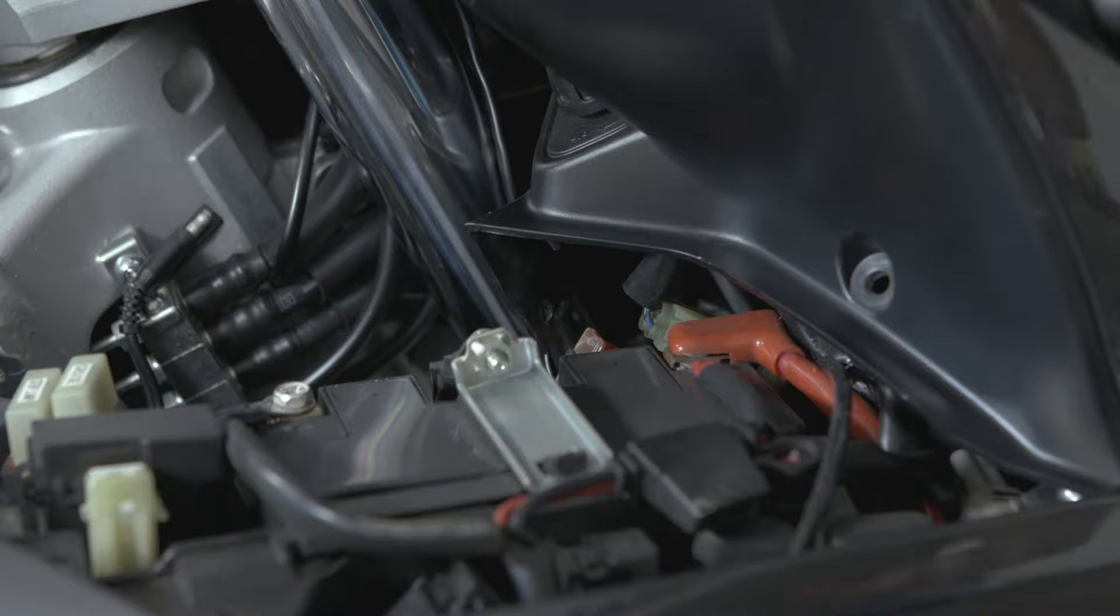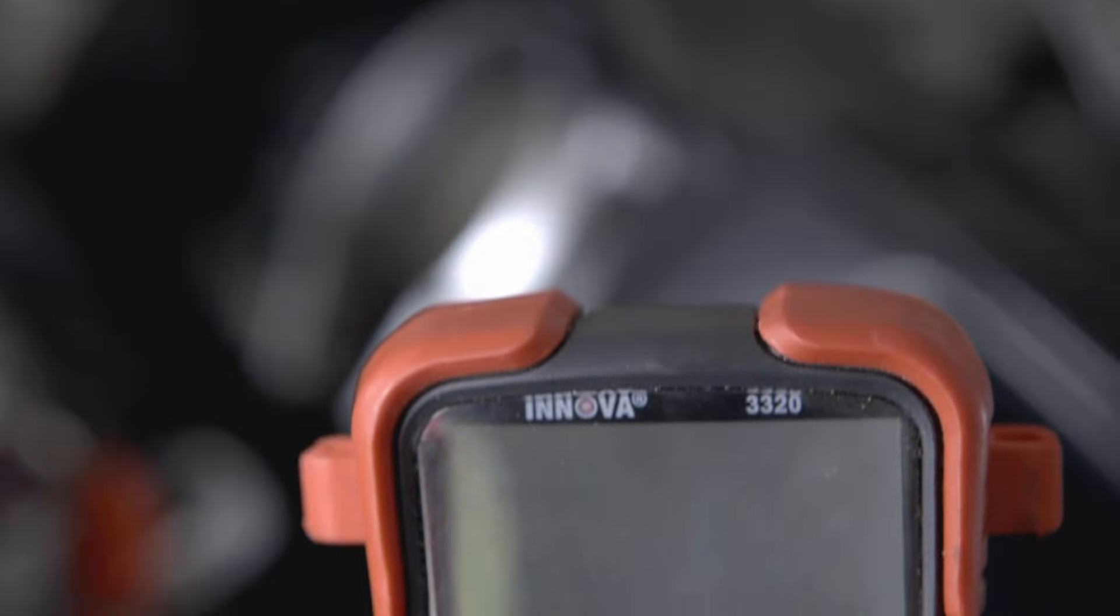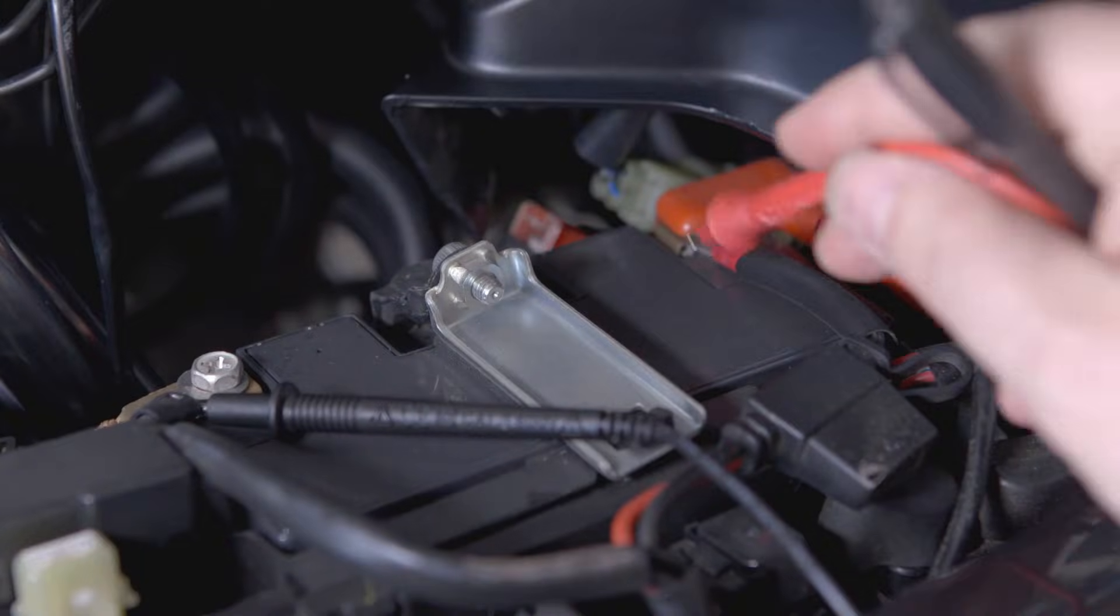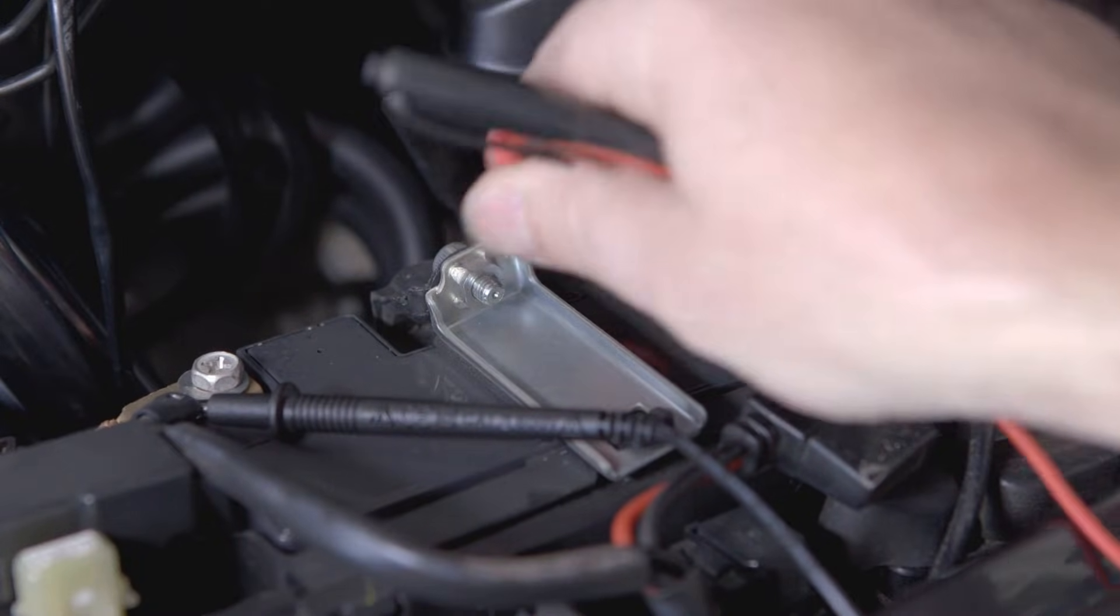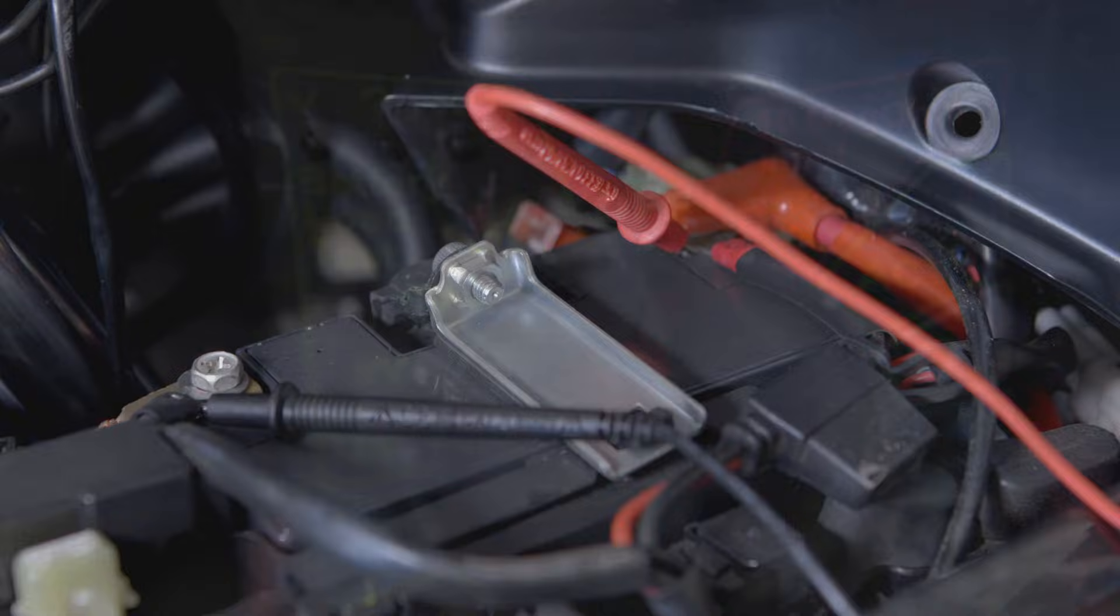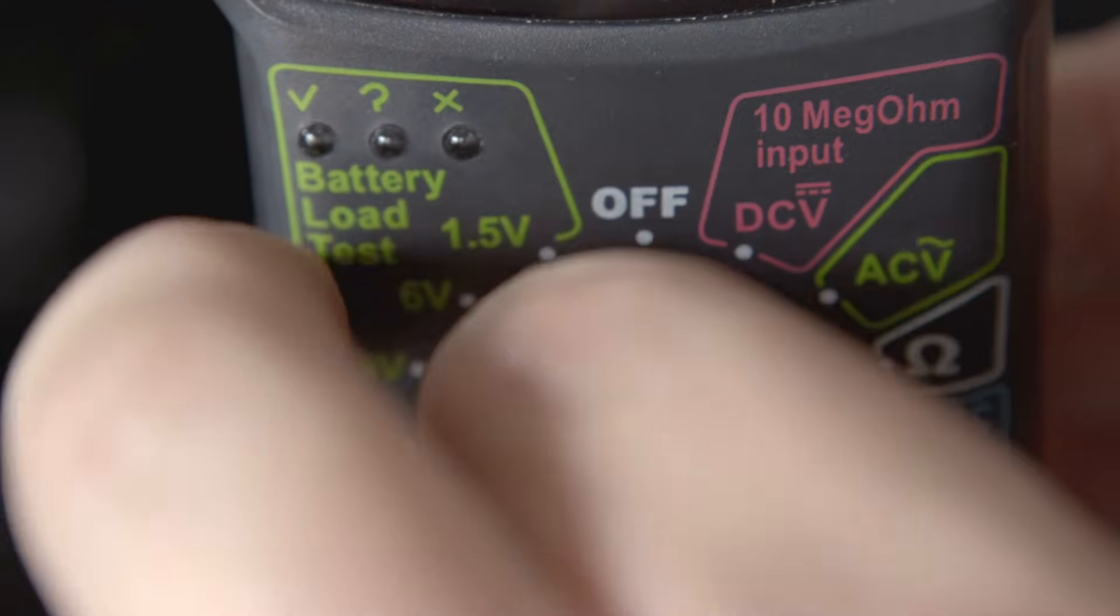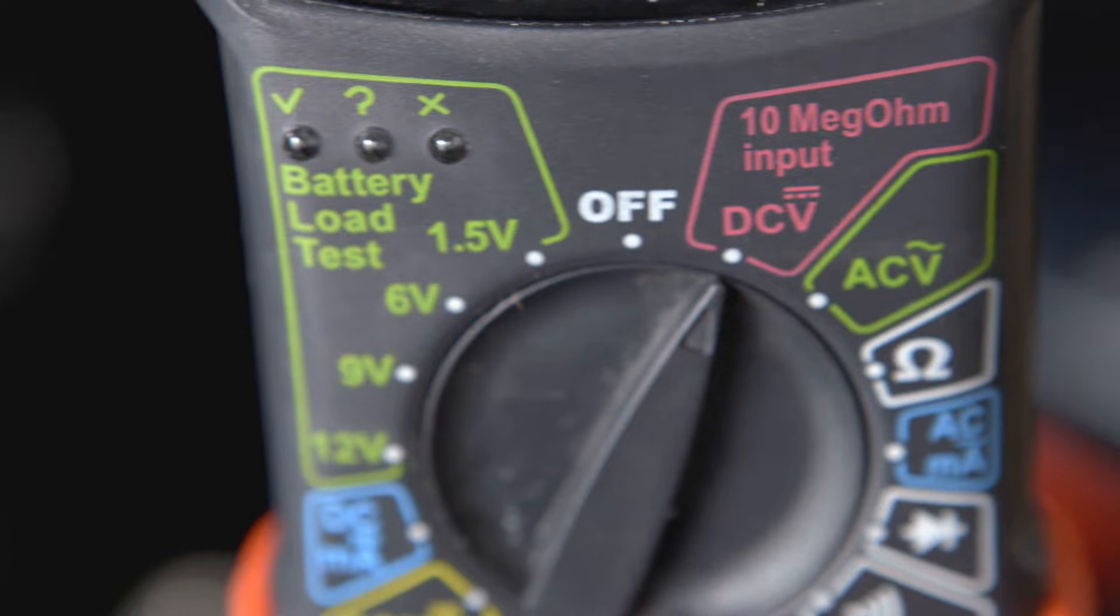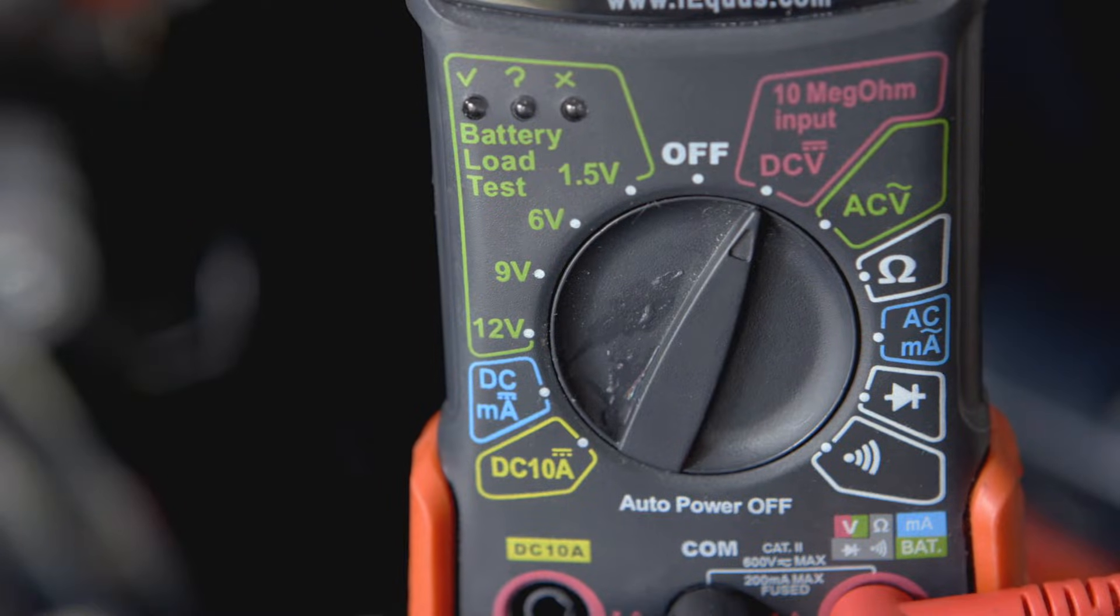After obtaining access to your battery and with the multimeter off, connect the negative cable from the multimeter to the negative connection on the battery. Then connect the positive cable from the multimeter to the positive connection on the battery. Now turn on your multimeter to test DC. It'll be the one with the V and the straight solid and segmented lines above it.